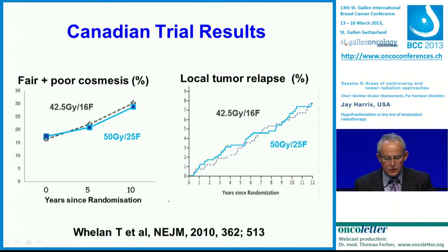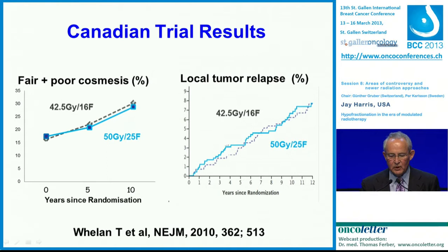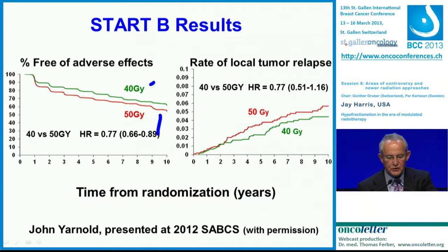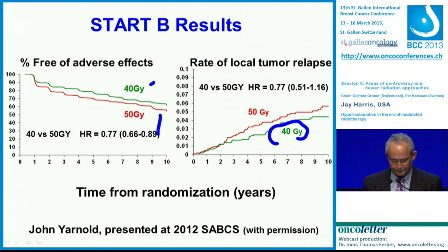These are the Canadian results from the New England Journal. On your left are cosmetic results comparing hypo-fractionated treatment to conventional fractionation, showing absolutely no difference. And on your right is local tumor relapse — again, the two arms are superimposable. These are the START-B trial results. On your left, again, are freedom from adverse effects, and if anything, the hypo-fractionated patients are doing somewhat better than the patients treated with conventional fractionation. And looking at the rate of local tumor relapse, the hypo-fractionated arm is doing slightly better.